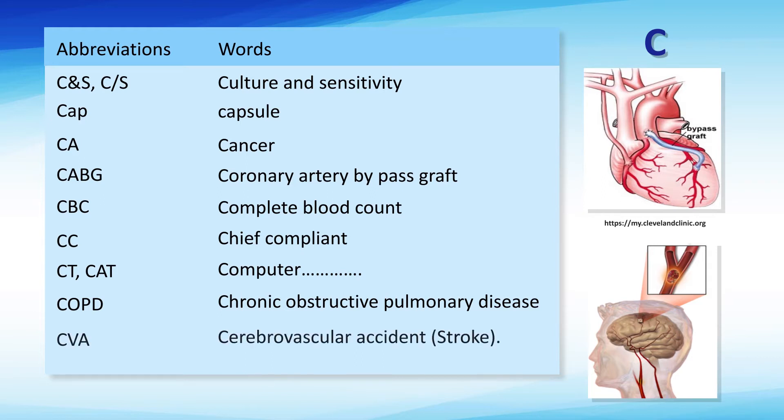The CVA is a stroke. As you may be familiar with this word already in the nervous system word construction, stroke or CVA can happen due to the blockage of the vessels that supply the brain tissue.